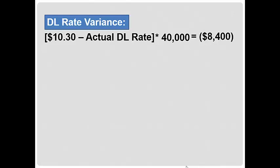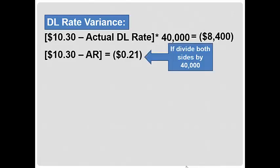Now I'm going to solve this algebraically just by dividing both sides of the equal sign by 40,000. If you do that, you get $10.30 minus the actual rate and that is equal to negative 21 cents. Again, I just divided both sides by 40,000. There would be other ways to actually work that algebraically if you prefer.